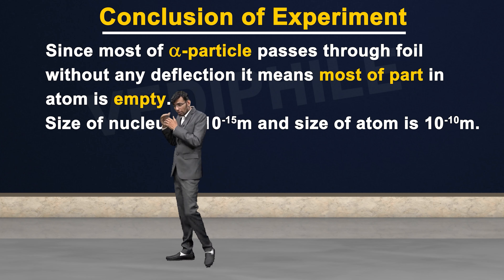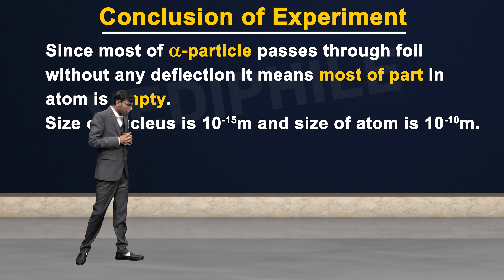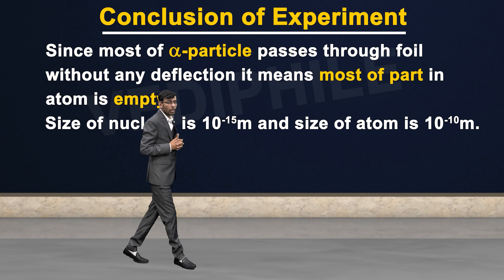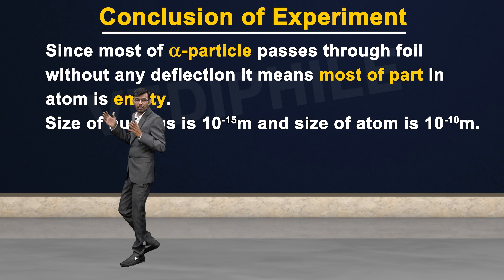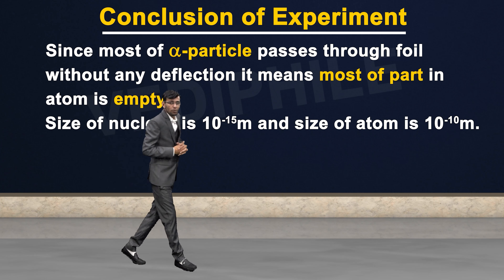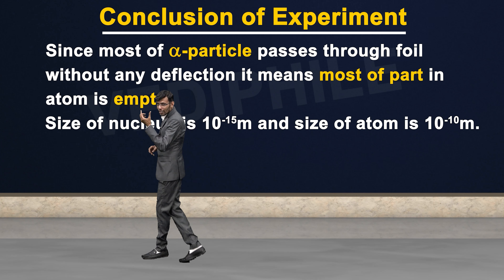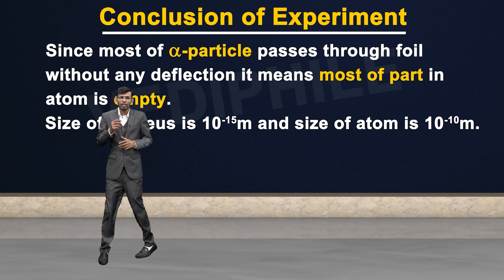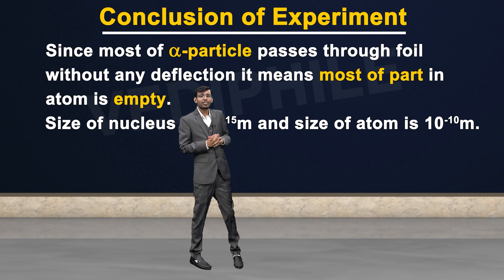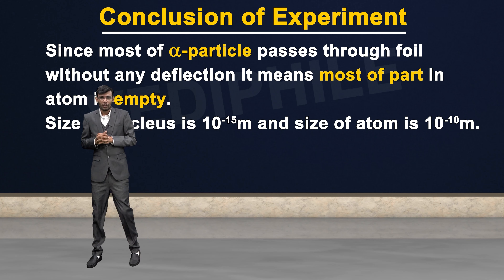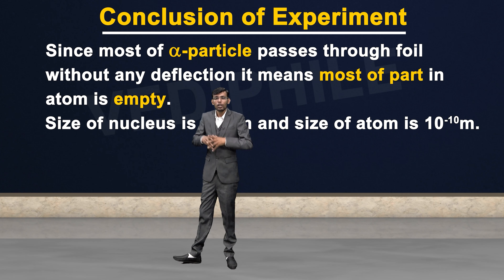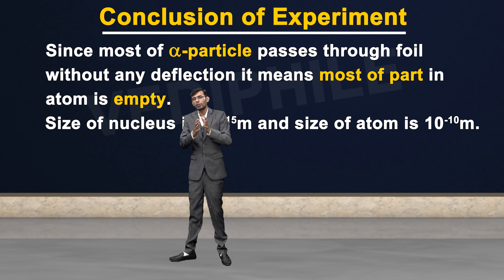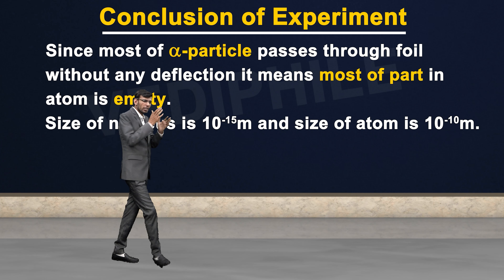The size of the nucleus is of the order of 10 to the power minus 15 meters, while the size of the atom is 10 to the power minus 10 meters. If we take the size of the nucleus as a cricket ball, the first orbit would be at a radius of five kilometers — the size of a whole city. If the nucleus is the size of a marble, the atom would be the size of a large football ground. So the nucleus is comparatively very small, and that is why most of the atom is free space, allowing alpha particles to pass through without deflection.